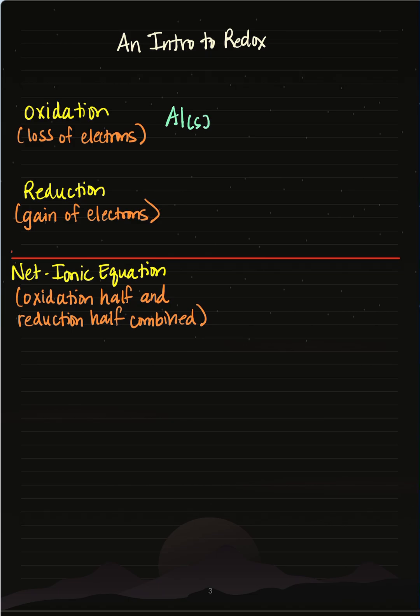A good example of a metal that gets oxidized spontaneously is aluminum. When aluminum is oxidized, it breaks down into aluminum ions and three electrons.